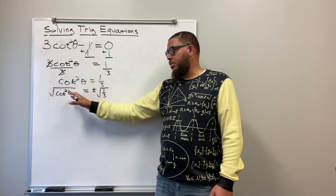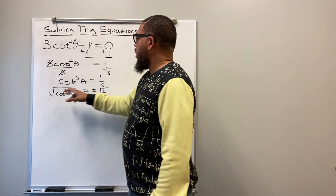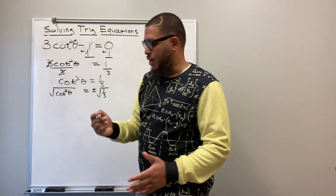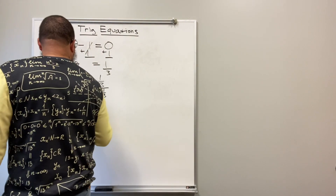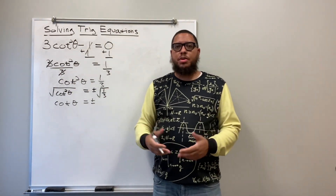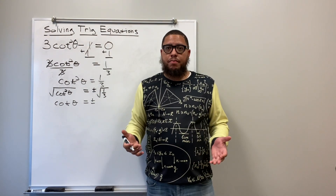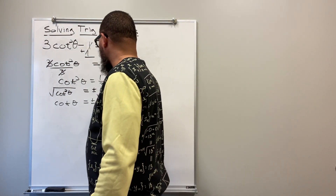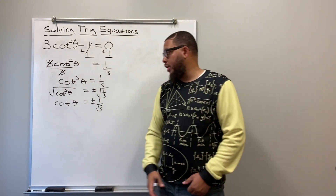This plus or minus applies when taking the square root — not the cube root. The square root and the exponent two cancel each other out, leaving cotangent of theta equals plus or minus the square root of one third. The square root of one third can be written as the square root of one over the square root of three, which simplifies to one over the square root of three.